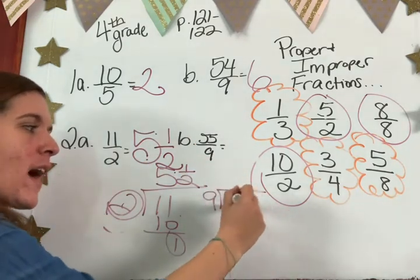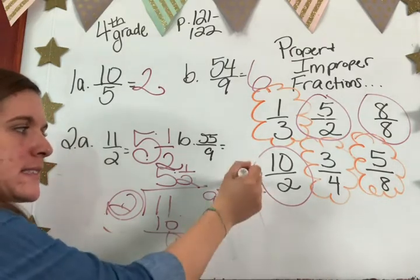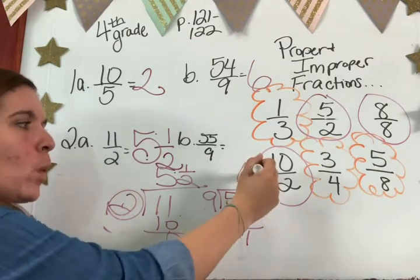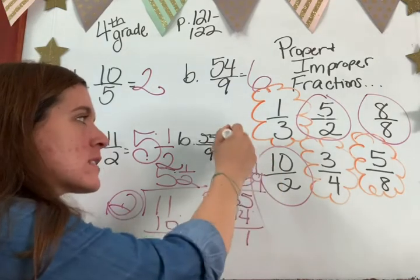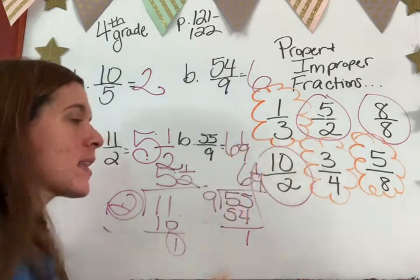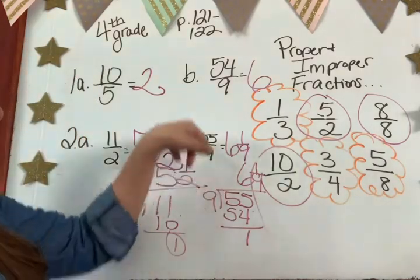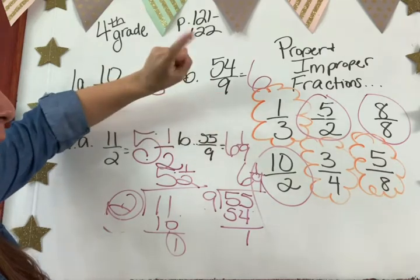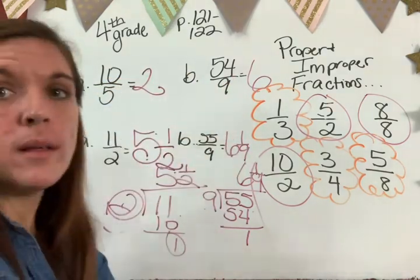Nine into 55. How many times can nine go into 55, Kiana? Six. Six times nine is 54. So my remainder is one. One over what? Jayla? One over nine. So your answer is six and one ninth. But can you do that in your head? Of course you can, right? Nine into 54 is six times. Fifty-five minus 54 is one. So my remainder is one over nine. My denominator doesn't change. Okay?